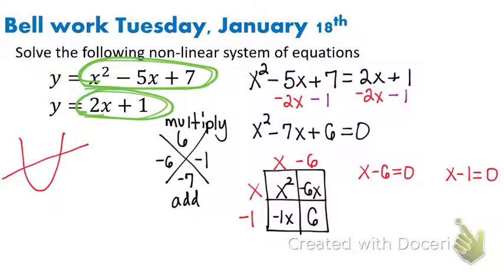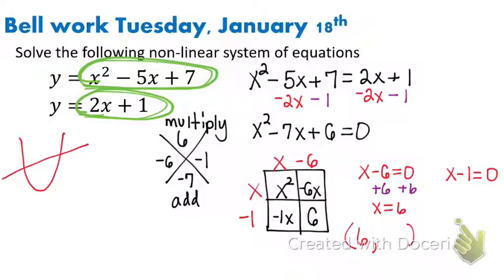Let's solve both of these equations. If you have x minus six equals zero, when you solve it, what would you get? x equals six. So when I write that as an ordered pair, x equals six, we need to find y. Take that six and use either one of the equations to find y — the second one is a little easier. So take two times six plus one to get your y value. Two times six plus one would be thirteen.